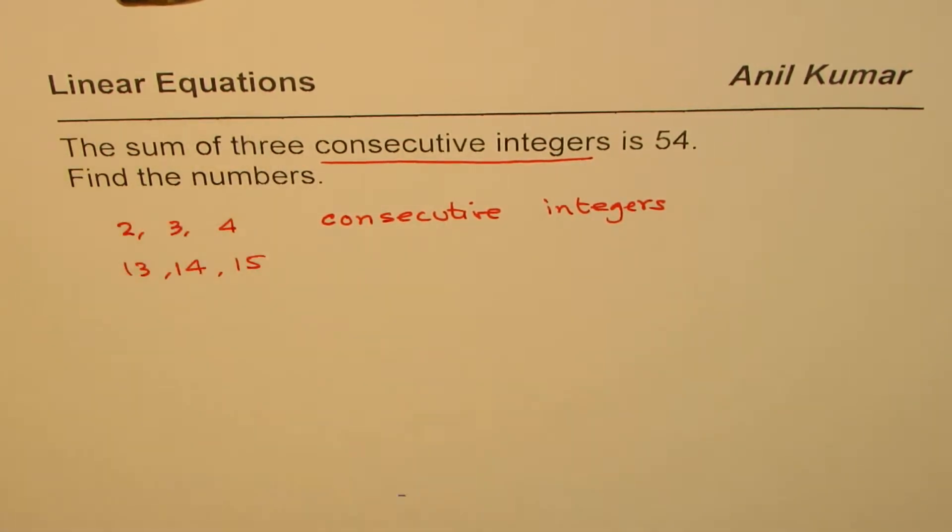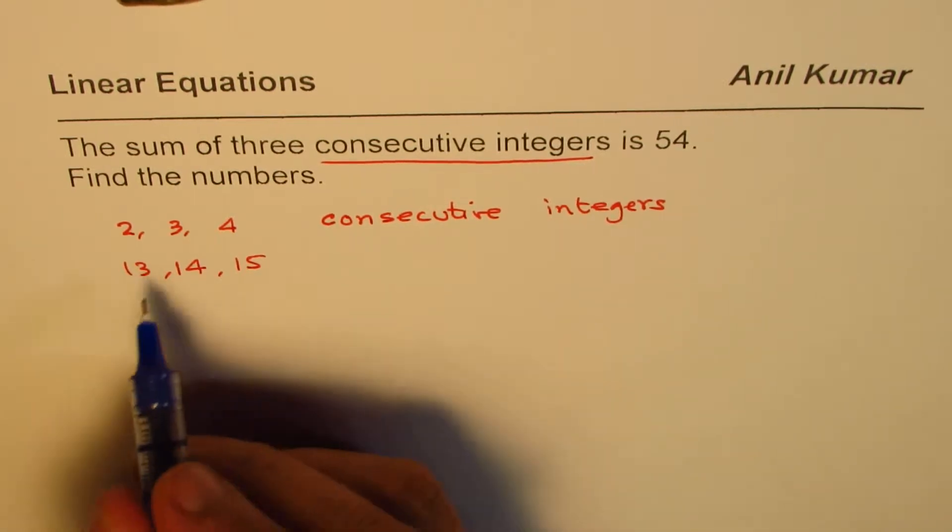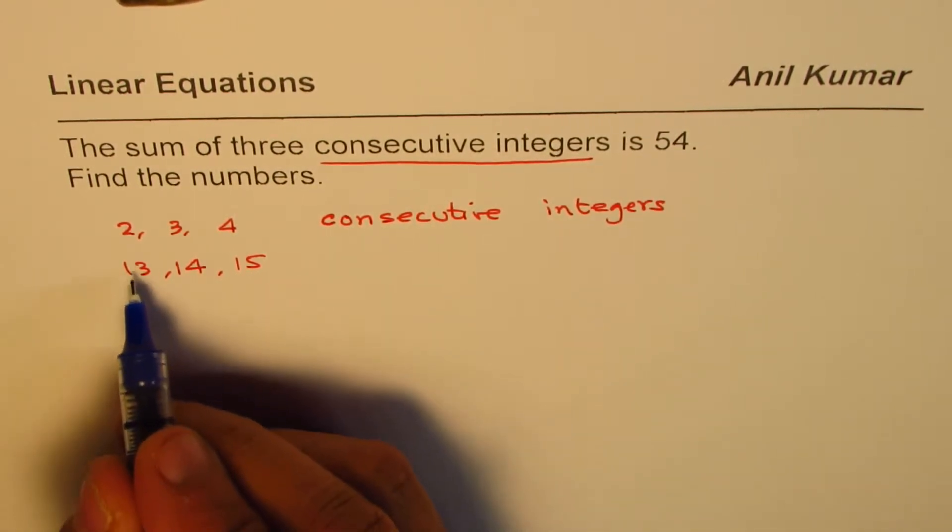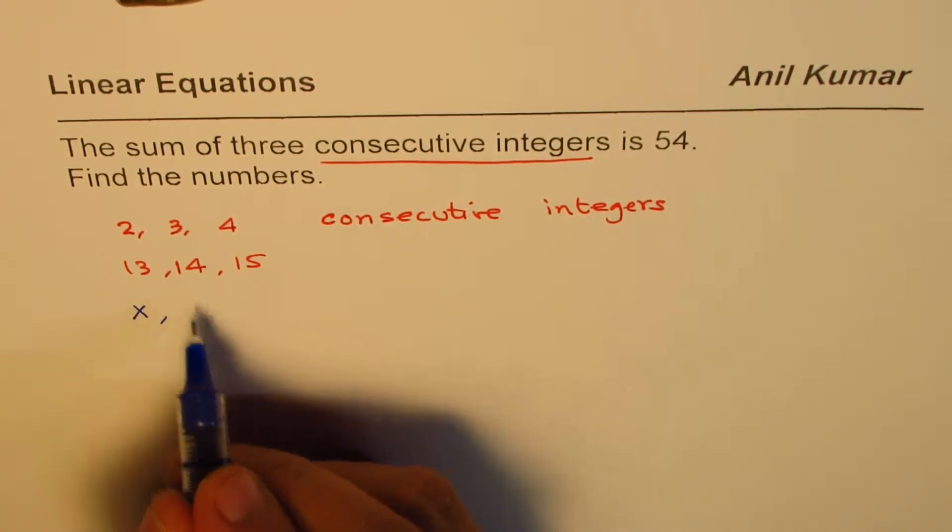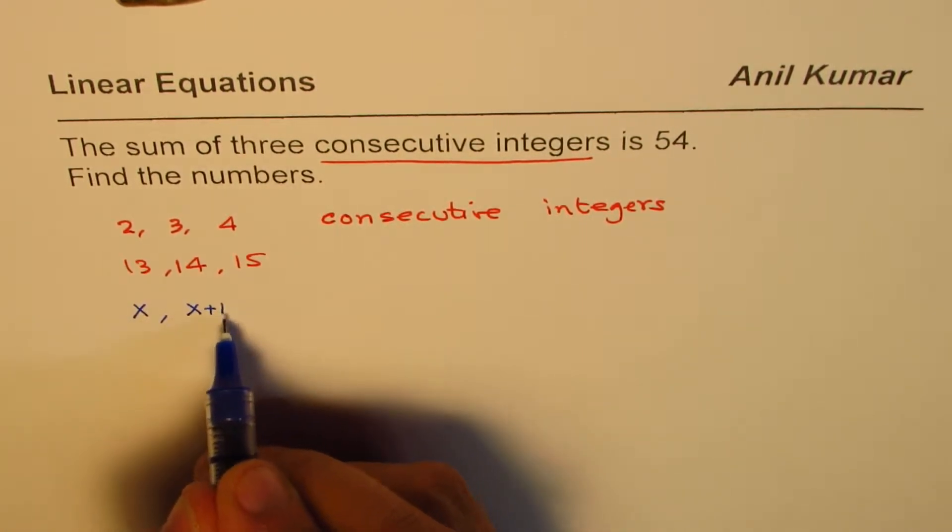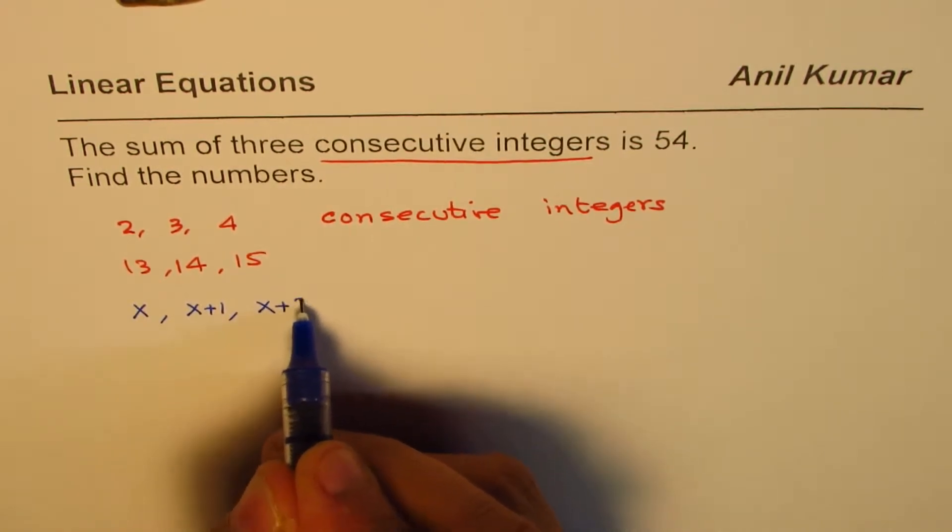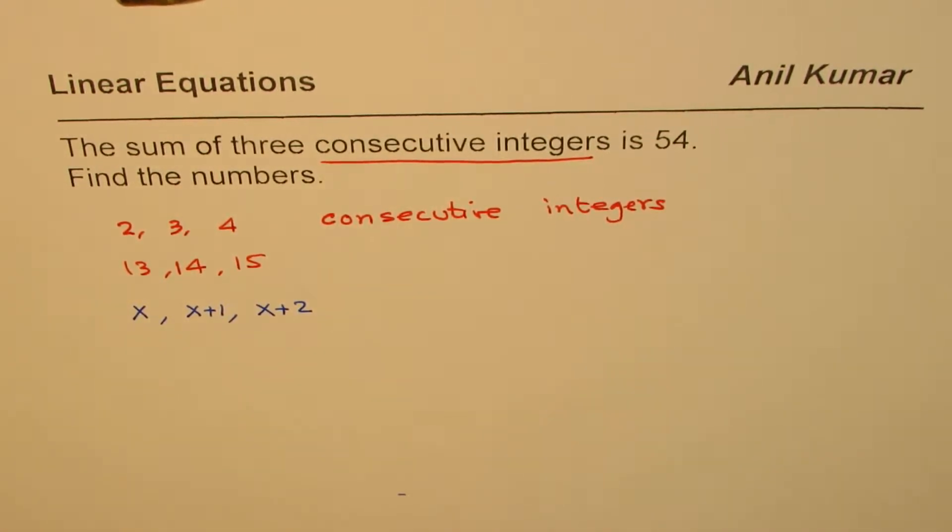If we are writing equations, then we have to define some variable. So, if I write, for example, x for the first number, then the other number will be x plus 1 and the next number will be x plus 2. One more each time. Or you could say difference between the numbers is only 1. So then in that case, the three numbers are consecutive numbers as we have given here.